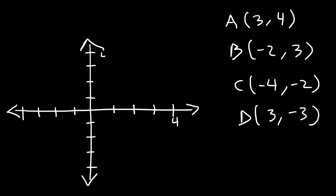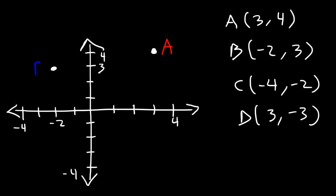This is positive 4, and over here we have negative 4. Let's start with (3, 4): here's an x-value of 3 and a y-value of 4 — they meet at that point, so (3, 4) is point A and it's in the first quadrant. Next, let's plot point B at (-2, 3), which is in quadrant 2. Then point C at (-4, -2), which is in quadrant 3. And (3, -3) is right here, which is in quadrant 4.